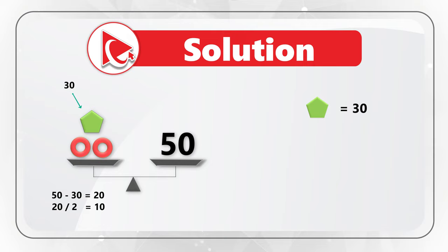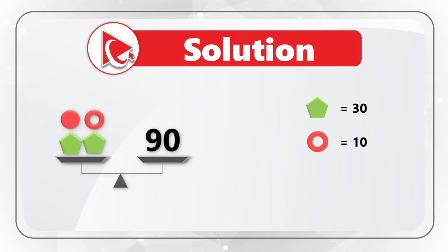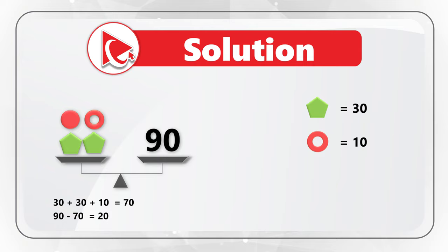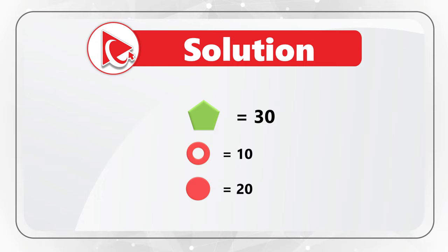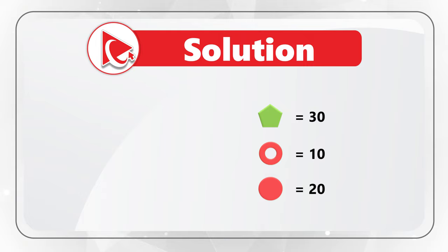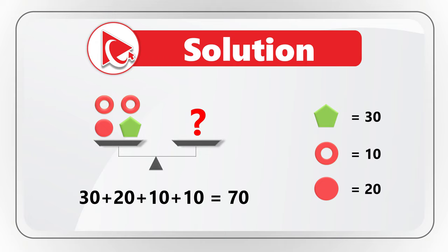On the next scale, we have two pentagons, one circle and one bagel, and the combination of these shapes equals 90. Let's do the math: 30 plus 30, which is the value of two pentagons, plus 10 equals 70, which means that the circle equals 90 minus 70, which equals 20. Now we know the values of all the shapes: pentagon equals 30, bagel equals 10, and circle equals 20. We can calculate the missing number: 30 plus 20 plus 10 plus 10 equals 70, which means the correct answer is choice C, 70.